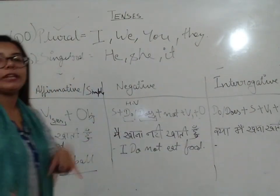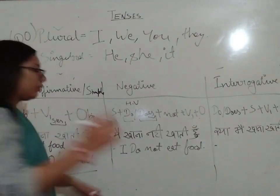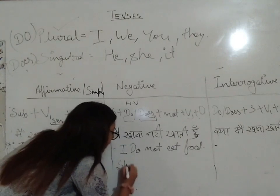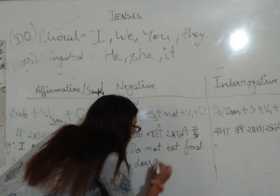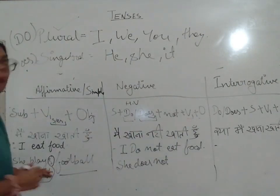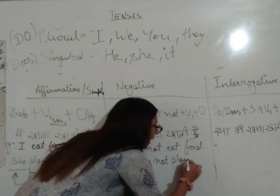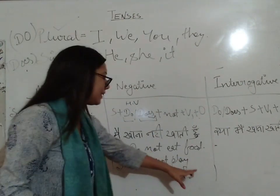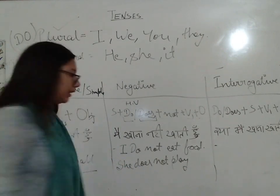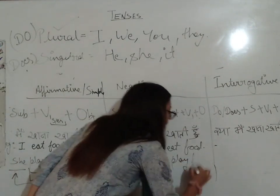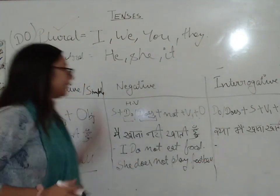So 'I do not eat food.' And for the singular example, 'she plays football' converted to negative becomes 'she does not play football.' Here we write 'play' not 'plays' because our S has already come with 'does.' This is our complete negative sentence.